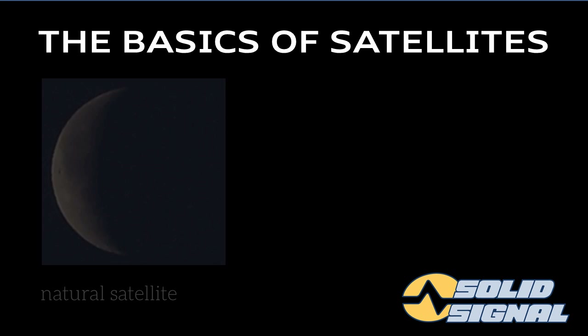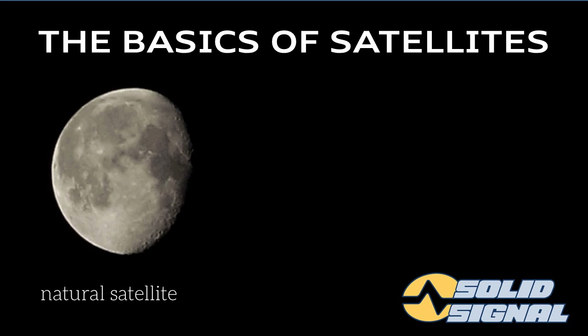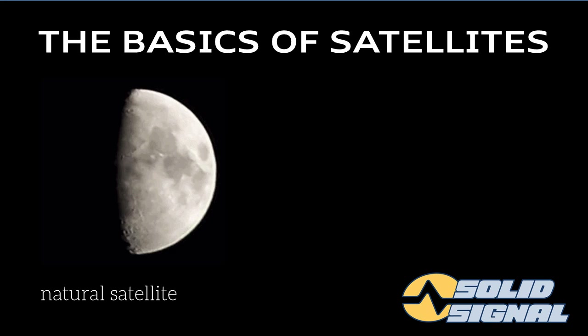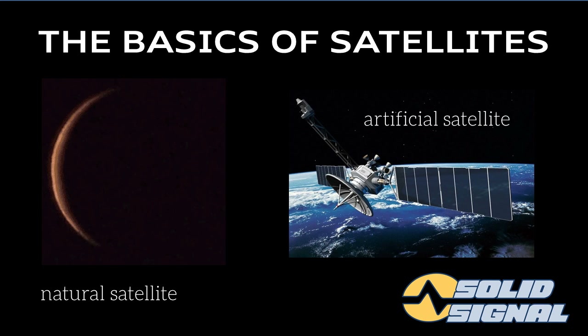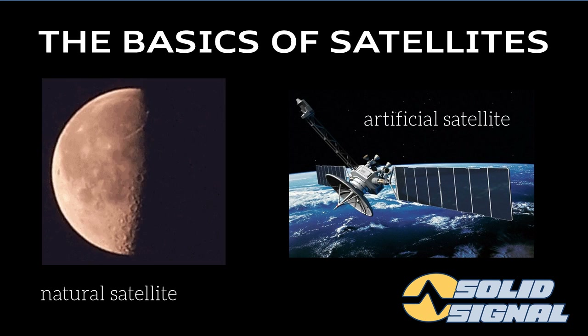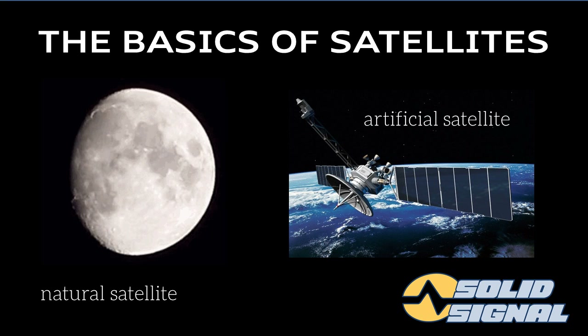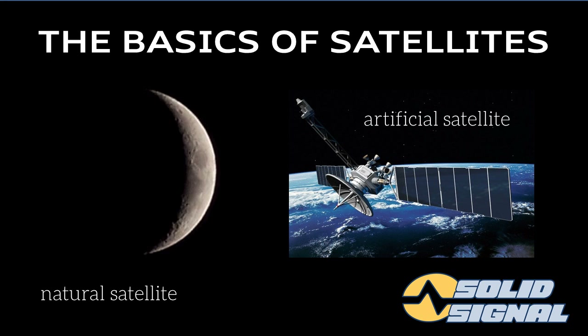The word satellite just means anything that's still connected to you, even though it's far away from you. There are two kinds of satellites in the sky. Natural satellites are things like the moon — we only have one of those on Earth. On the other hand, there are literally thousands of artificial satellites. They're used for spying, for cameras, for Google Earth, and in the case of this particular presentation, they're used for television.